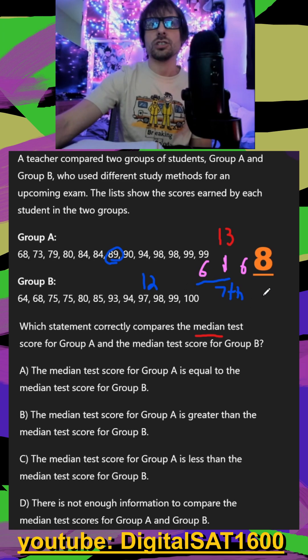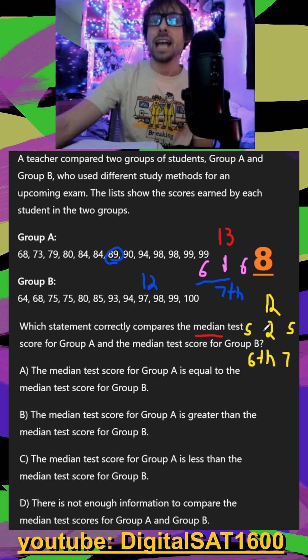When there's an even amount, so we have 12, you take your middle two, and that's going to be 10 values left. That's five to the left and five to the right. So what that means is I want my sixth and my seventh value, and then you're going to have to find the average of those two.